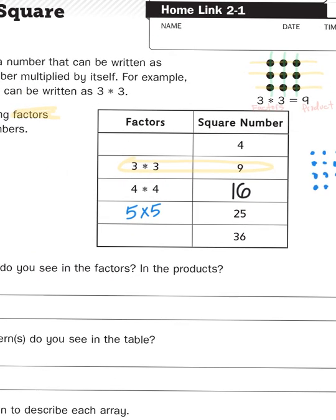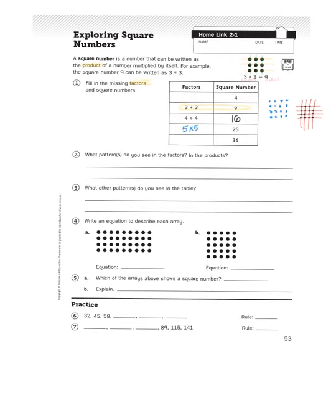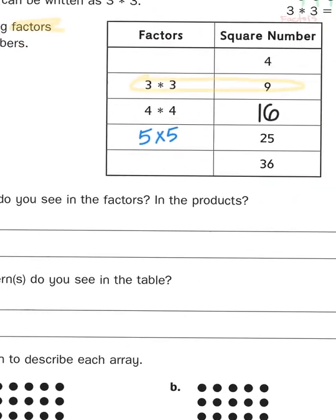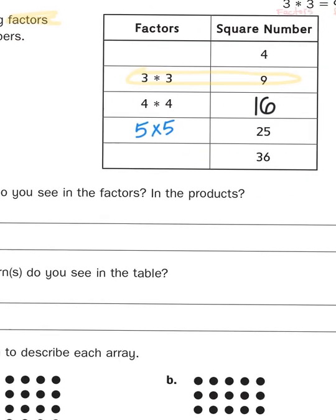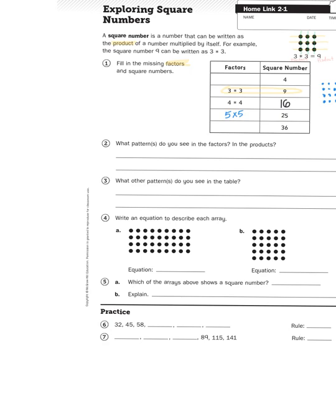So 4 times 4 gives me a product of 16. Okay, so fill out that table using your deductive reasoning to figure out what factors would come before 3 times 3 and what factors would come after 5 times 5.